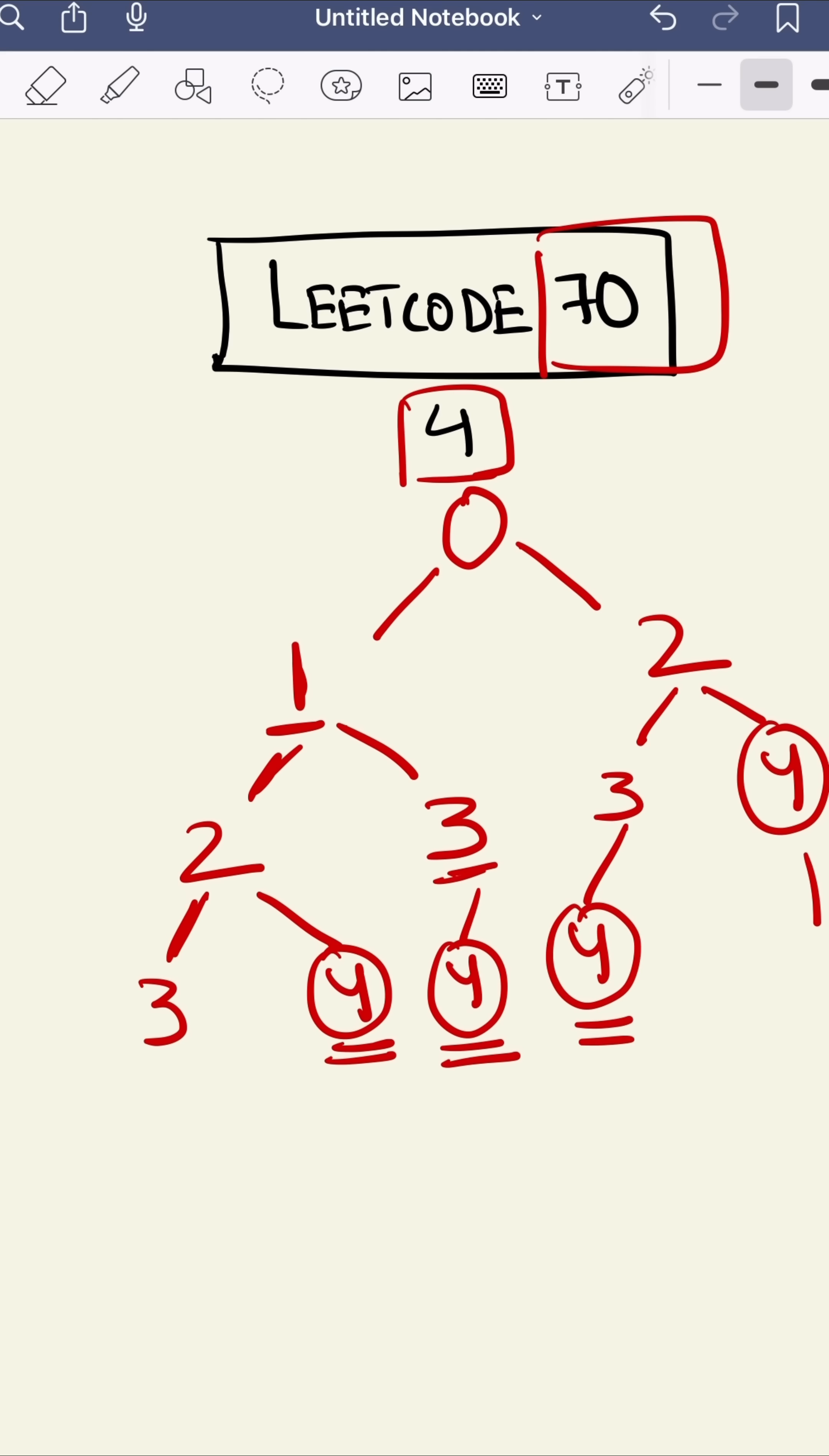We reach the top. And from here also, we can go one step to four. So we have visualized our problem in the form of a tree.